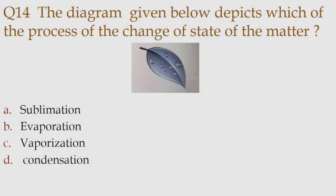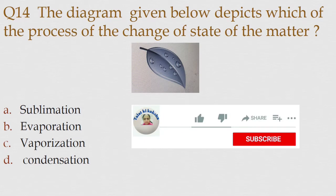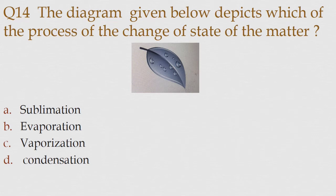Question number 14. The diagram given below depicts which of the following process of the change of state of matter. Option A: Sublimation. Option B: Evaporation. Option C: Vaporization. Option D: Condensation. The correct answer is option D: Condensation.